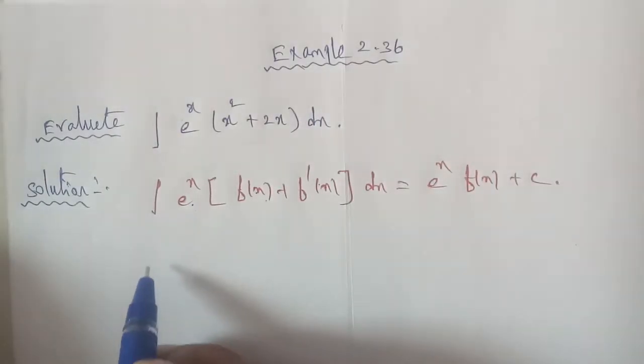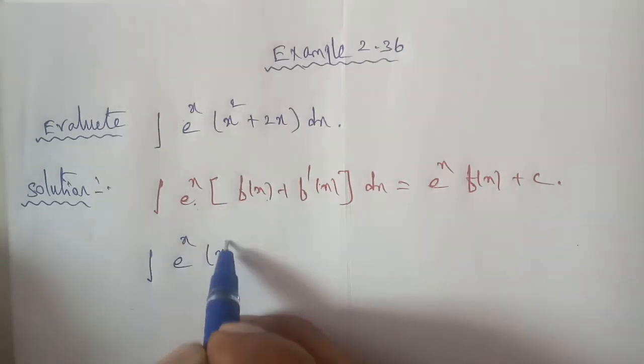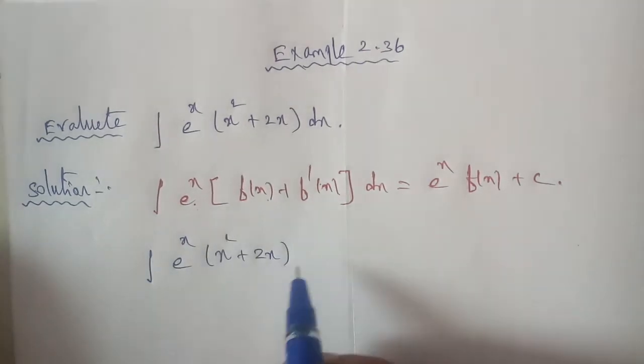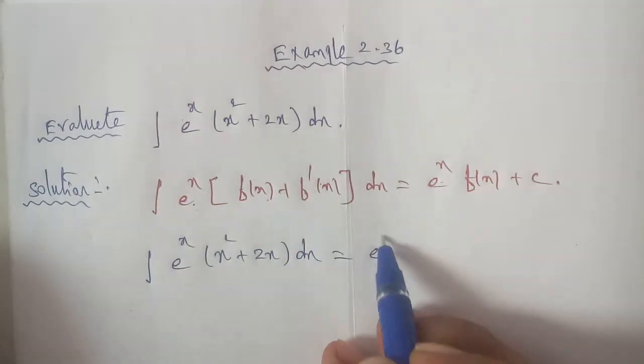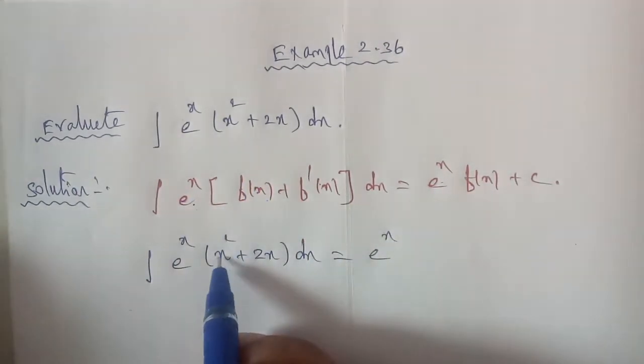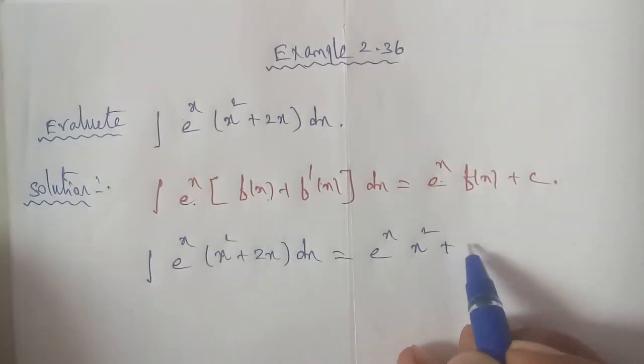Therefore, the answer to the integration of the given question, e power of x, x square plus 2x dx, is equal to e power of x, x square plus c.